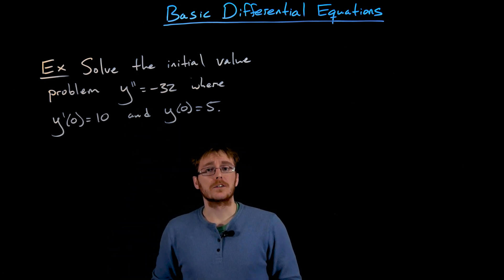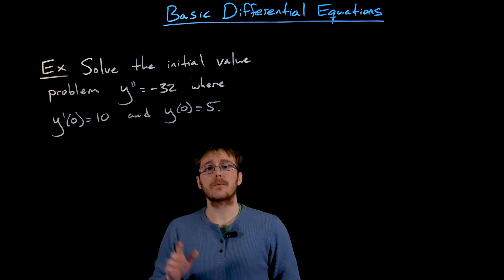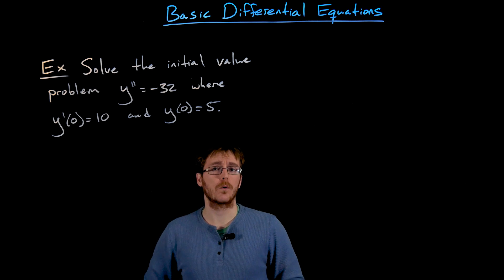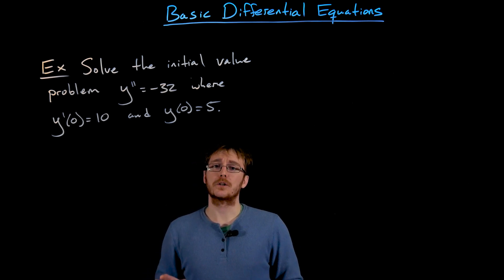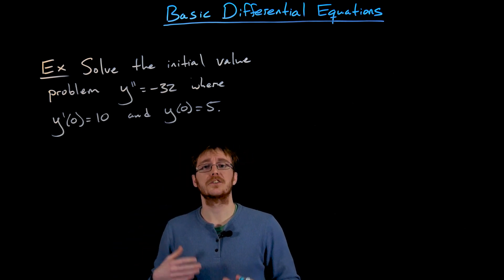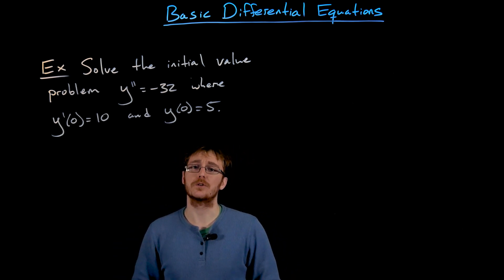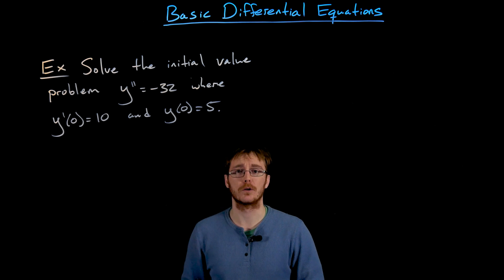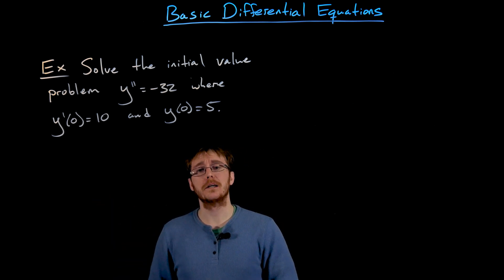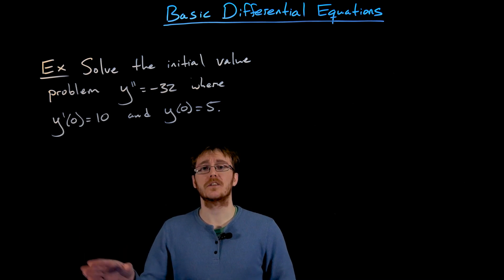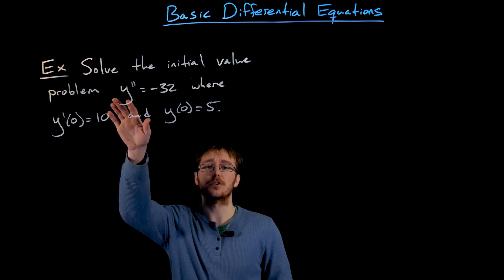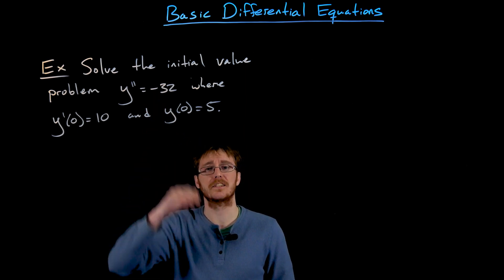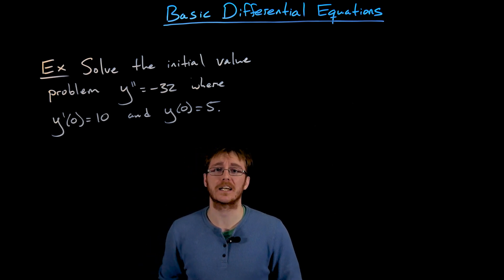This is a second order differential equation, and you might recognize it from the end of a calculus one or calculus two class. Most differential equations won't be set up so nicely that we can just use integration or antiderivatives to find the solution, but for some very basic differential equations that will be an effective approach. Without context, this resembles projectile motion — the second derivative describes acceleration, like a constant acceleration of negative 32 feet per second squared.